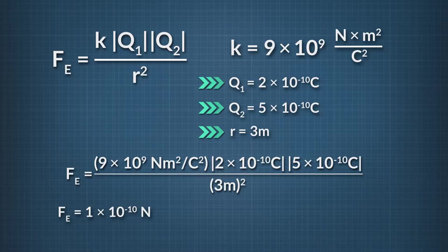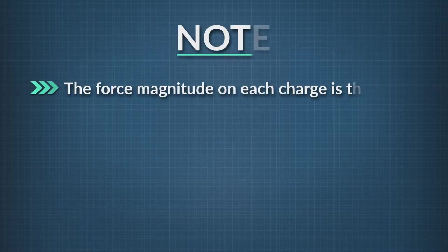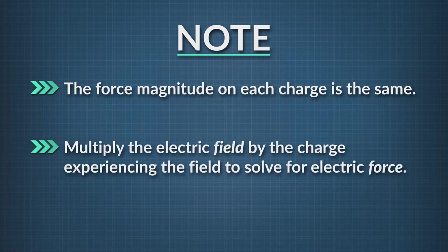Now there are very cool things about this result. One, it's the same magnitude on both charges, which is Newton's third law. Two, once we've figured out the electric field, we only need to multiply that result by the charge experiencing the field to find the force. This is true in general and makes it easier to find the electric force once we know the field and vice versa.